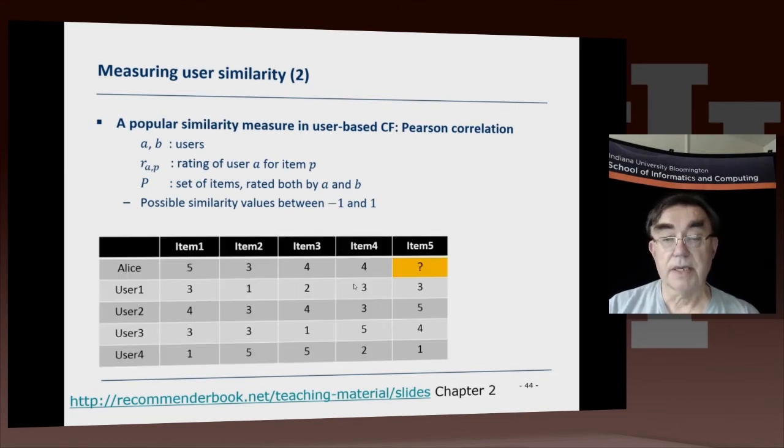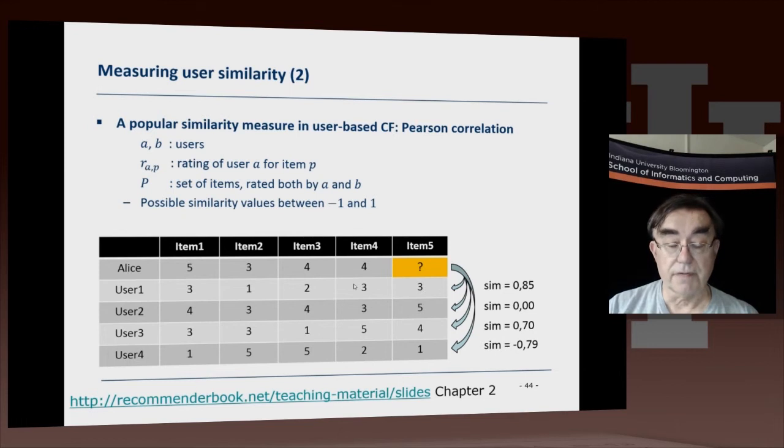So now we can see what happens for these examples here. And we find that Alice and user 1 are very similar. Although user 1 tends to be grumpy in analysis and rates his or her items lower than Alice, still the normalized similarity is high. User 2 is hardly any correlation. User 3 has high correlation again.